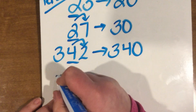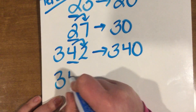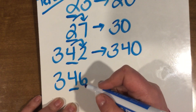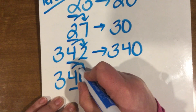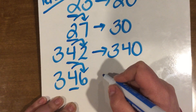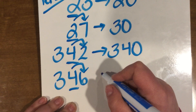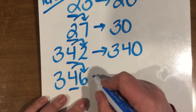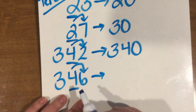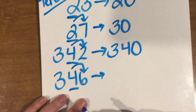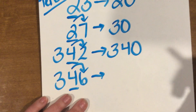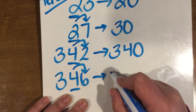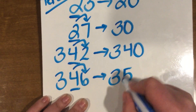Let's try another one — three hundred and forty-six, rounding to our nearest ten. Look right next door. Is it five or more, or four or less? Six is five or more, so we're going to bump it up to the next ten. What ten comes after forty? Fifty — nice job. So we're going to take this number and round it up to three hundred and fifty.